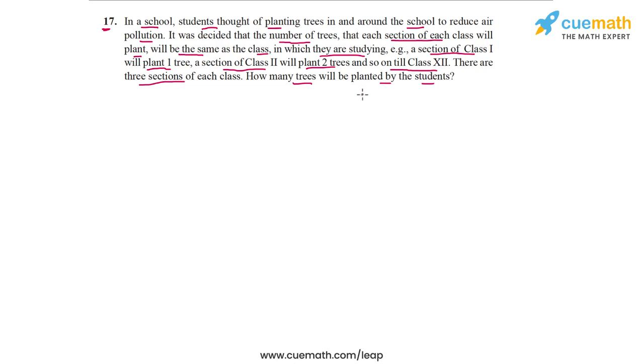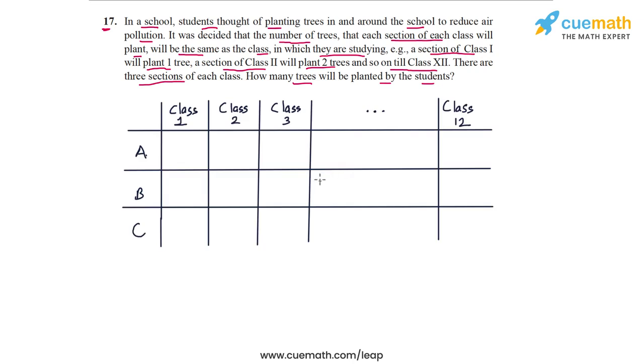We have classes from class 1 to class 12. Every class has three sections. Each section will plant the number of trees equal to their class. So to make sense of this problem, let's just tabulate the information given to us. Here I've drawn a table for you. The top row of the table represents the classes from class 1 to class 12, and the left column represents the three sections A, B, and C of each class.